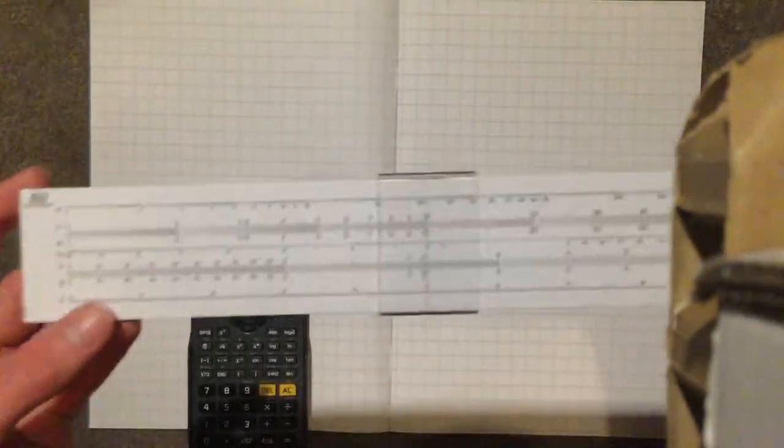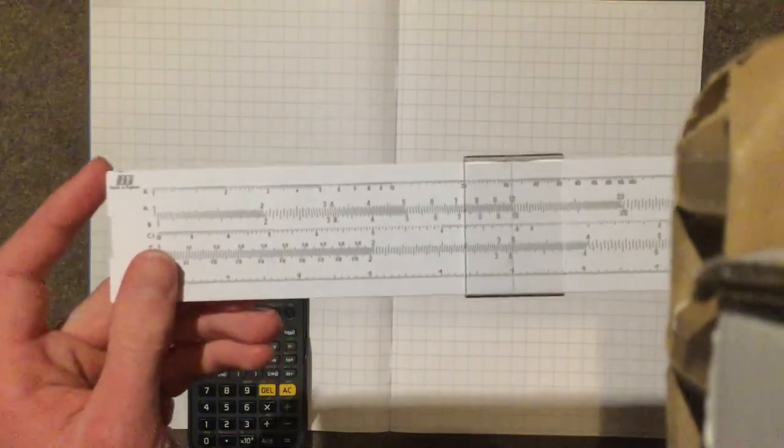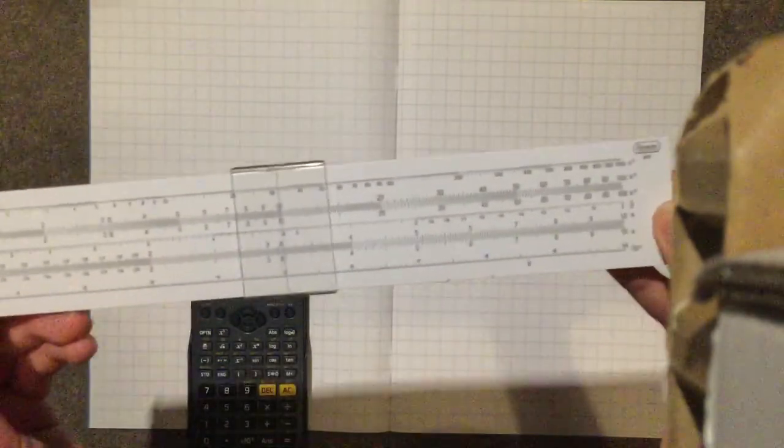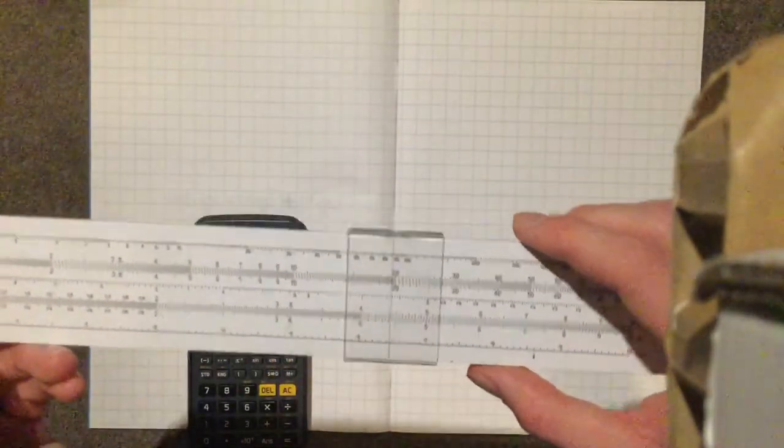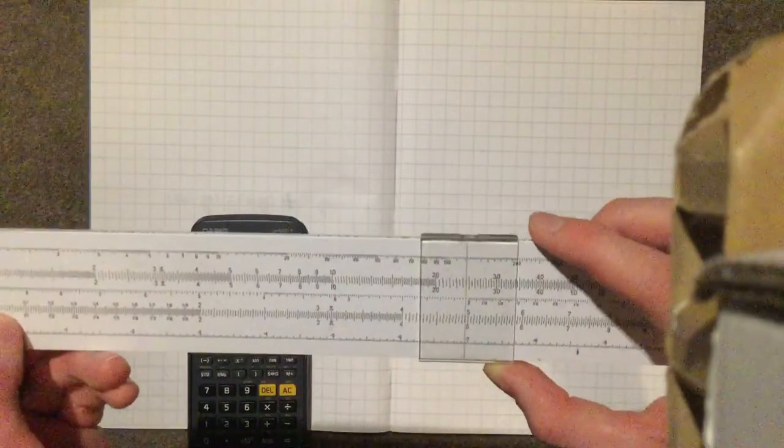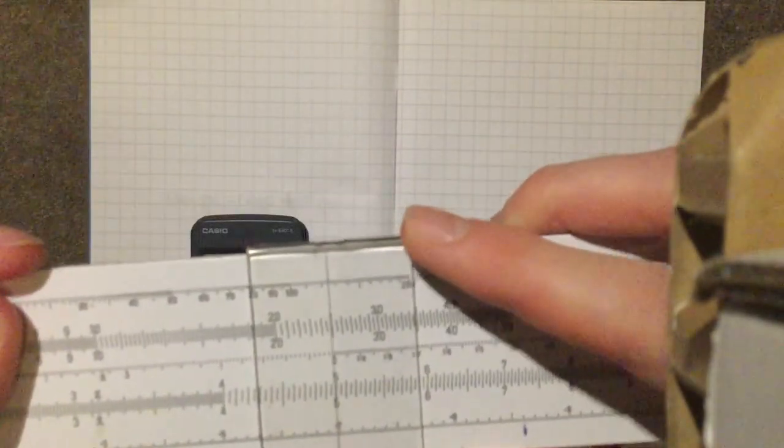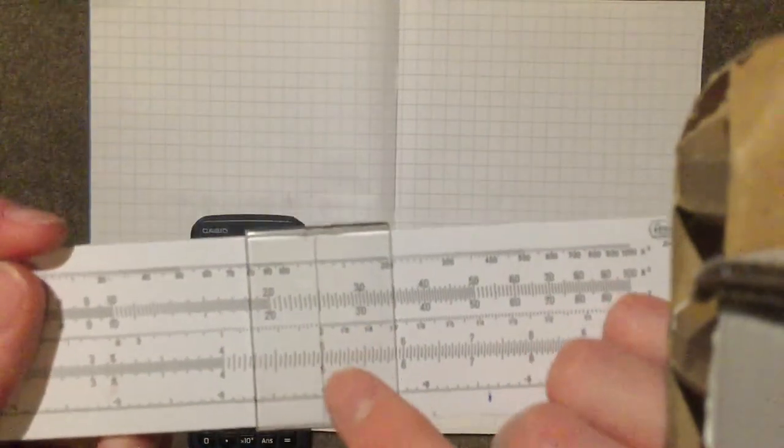So you'll notice that a slide rule has three strips, two that are stationary and then one that can move. There's also a hairline and this can move along the slide rule and it's not particularly important, especially for what we're going to be doing today, but it does mean you can read off the other scales a bit easier, so you can follow it up.